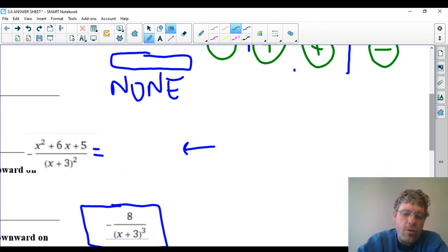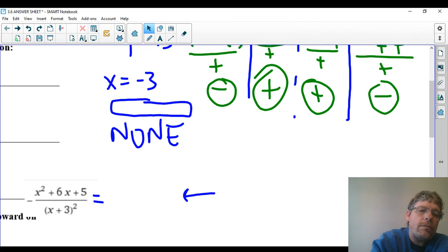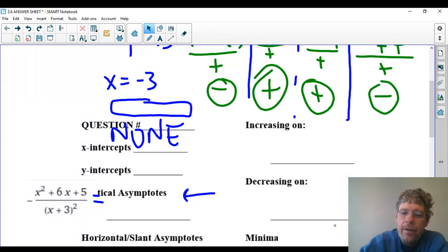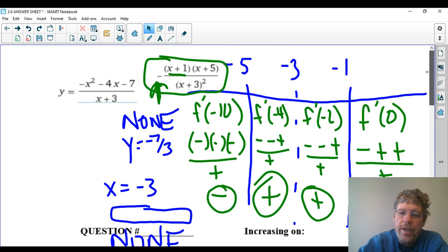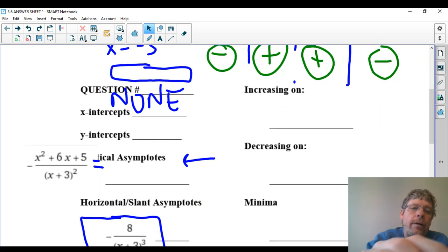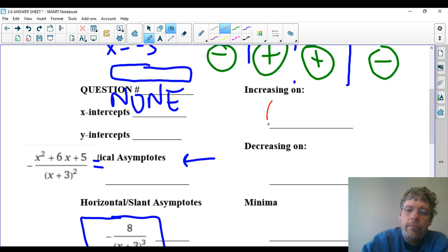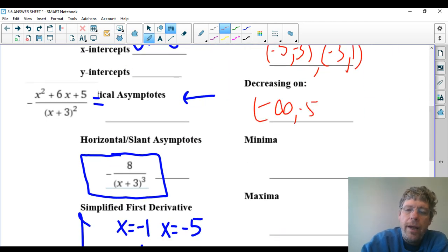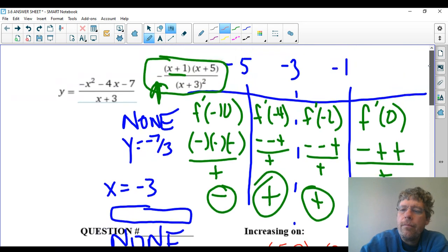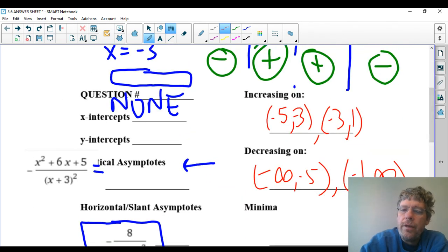So I'm ready to answer the questions about increasing and decreasing. It's increasing on the intervals negative 5 to negative 3 and negative 3 to negative 1, and it's decreasing on the outside intervals negative infinity to negative 5 and negative 1 to infinity. That should be a negative 1 there.